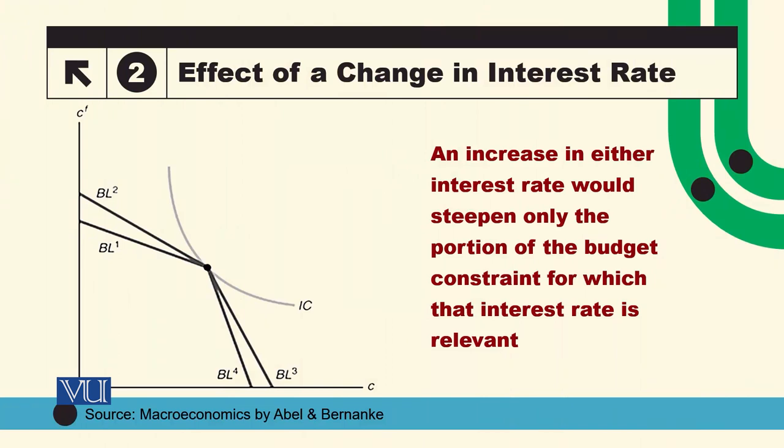اب ہم دیکھنا چاہتے ہیں کہ if there is any change in the interest rate, how will this budget constraint be affected? اب interest rate دو طرح کے ہوں گے — borrowing rate اور lending rate۔ جو بھی rate change ہوگا، صرف وہی relevant portion of the budget constraint effect ہوگا۔ For example, اگر lending rate increase ہو جاتا ہے — before the increase this was BL1 — اور increase ہونے سے budget constraint steeper ہو جائے گی، so وہ BL1 سے BL2 بن جائے گی۔